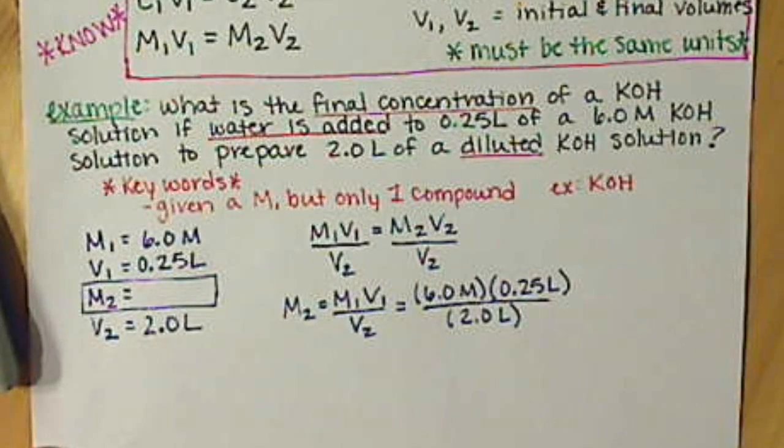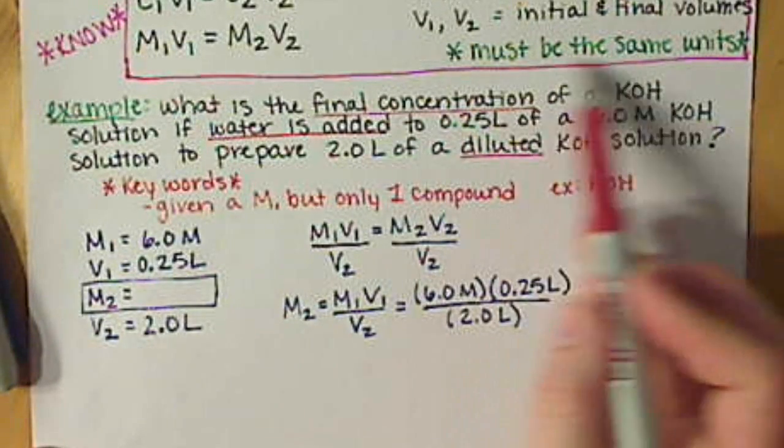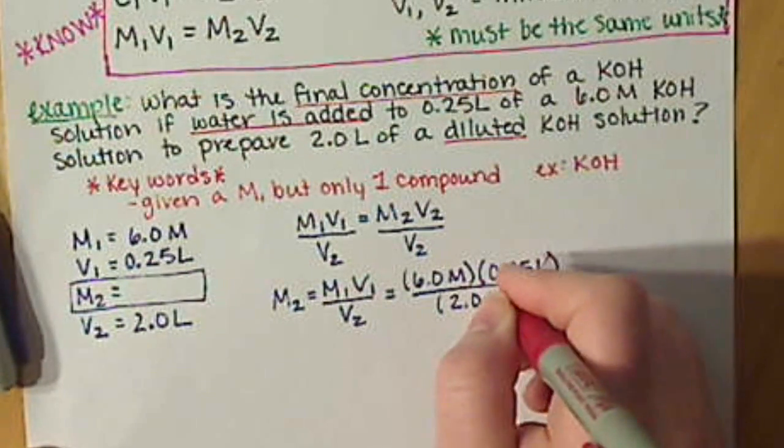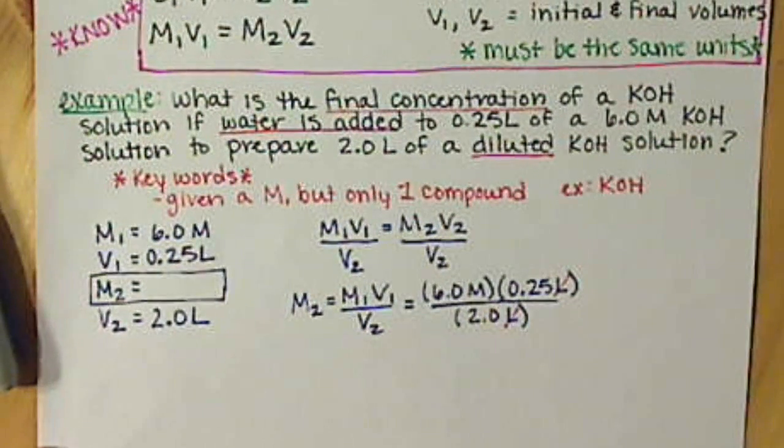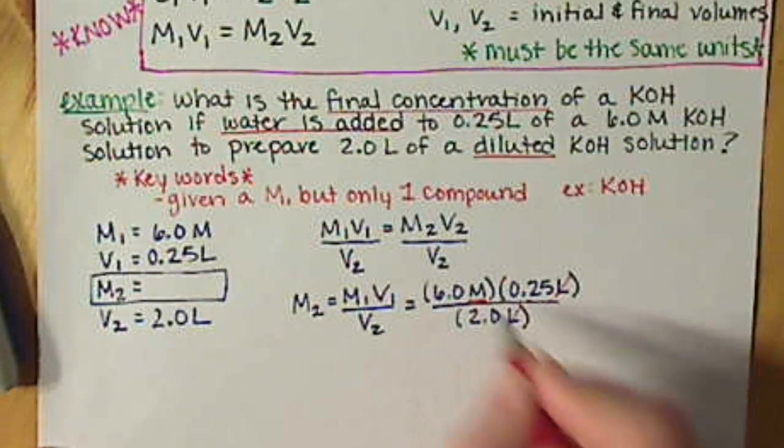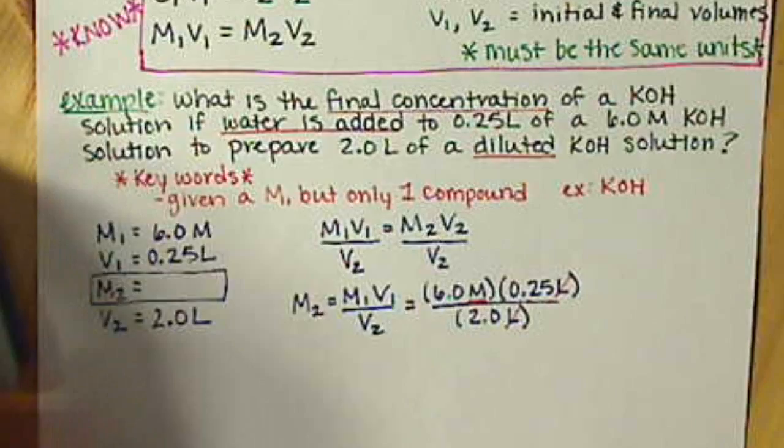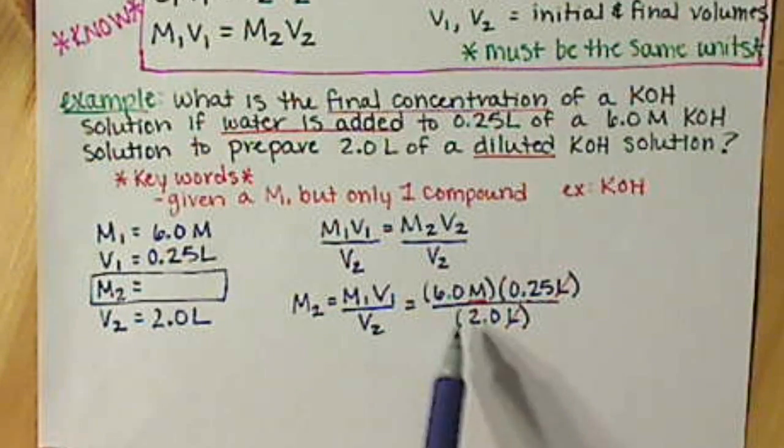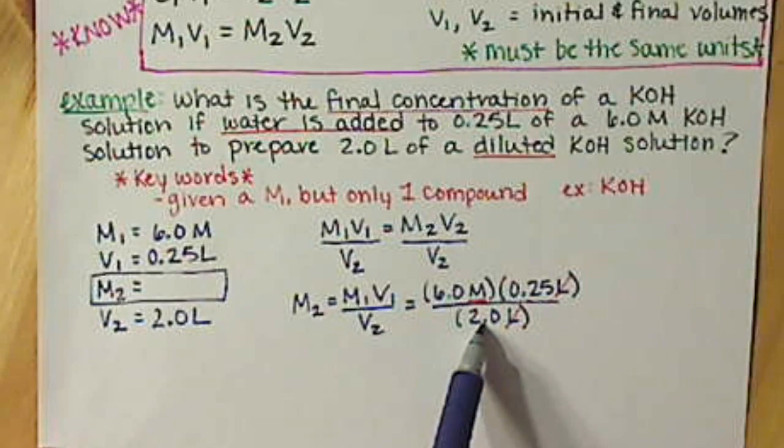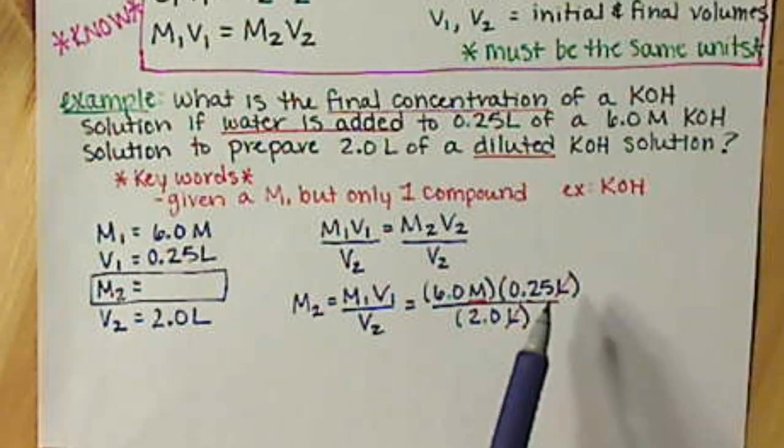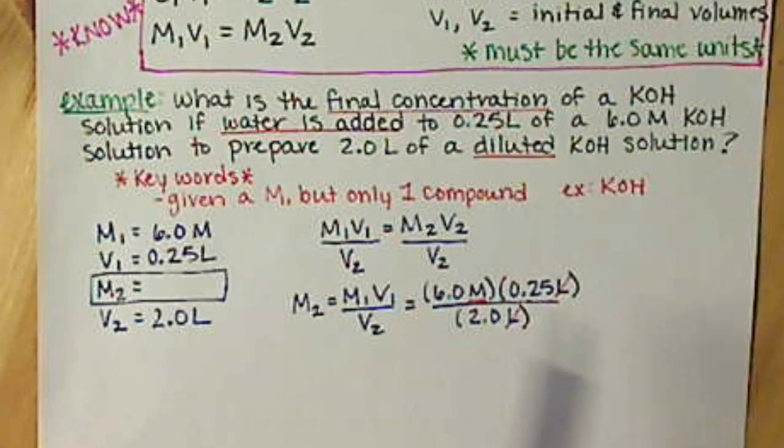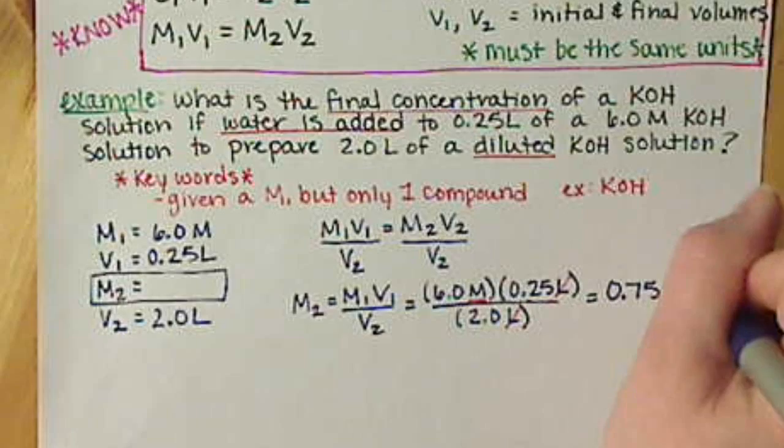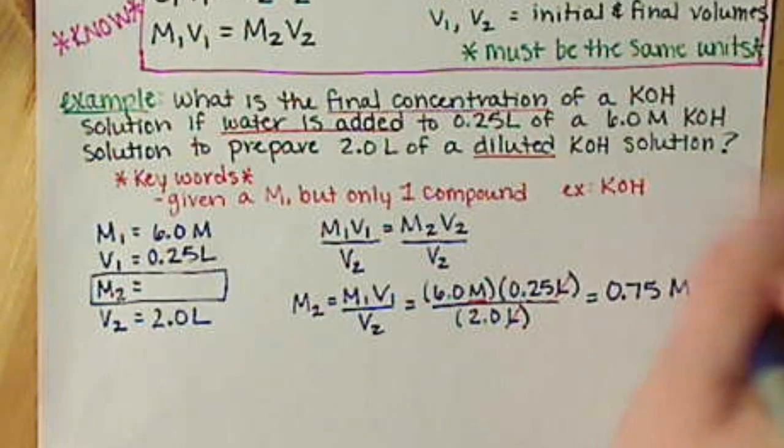Here's where it's important why we must be the same units. Because our liters and our liters are canceling out, leaving us with molarity, which is what we're after. If I do this in my head, I have 6 divided by 2 is 3 times 0.25, I'll end up with 0.75 molar KOH.